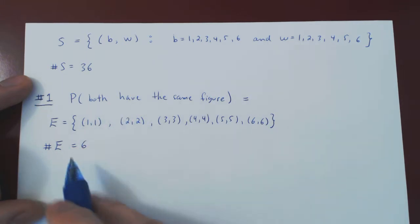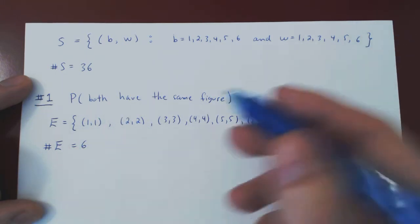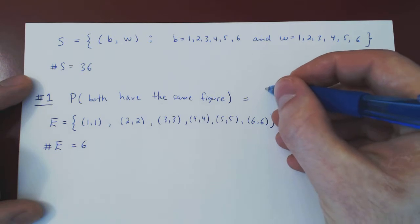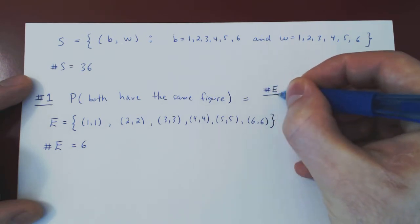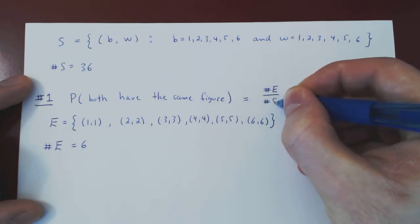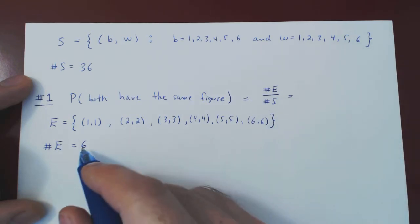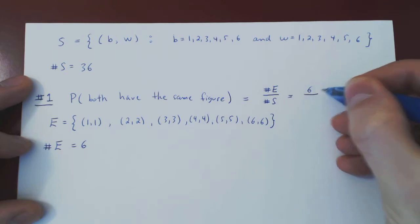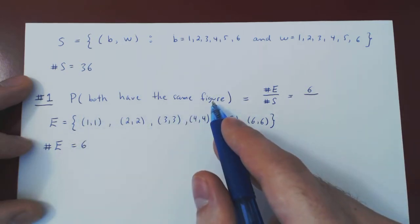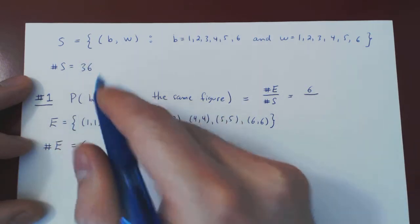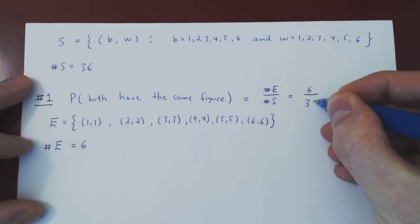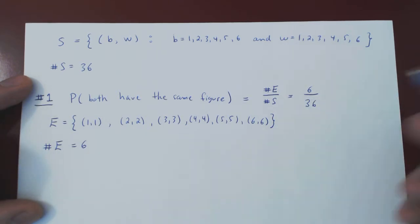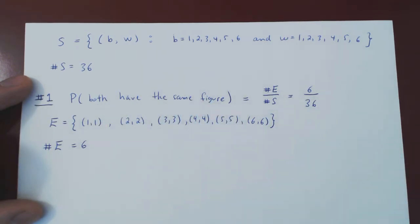The probability of E is the number of elements in E, the event of interest, over the total number of outcomes of the experiment. And that is simply six outcomes give us the condition we're after over all of 36 different possible outcomes. And that is our probability that both dies have the same figure.